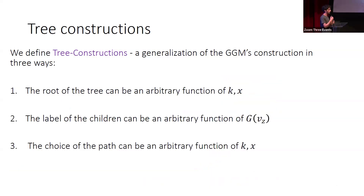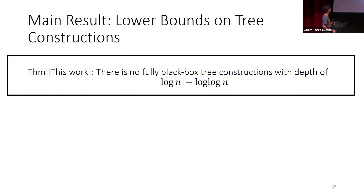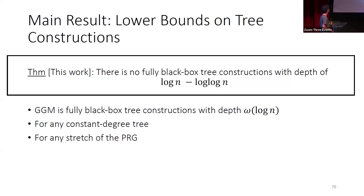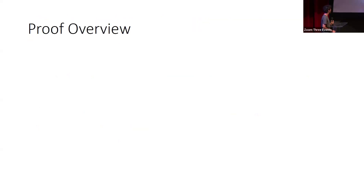GGM is a fully black-box tree construction with depth super-logarithmic, so our result is nearly tight. This result generalizes to every tree with constant degree, not only binary trees; for every stretch of the PRG, not only PRGs from n to 2n; and also for weak PRFs, which have a weaker security definition. To prove it, we use the oracle methodology following previous works. We show that for every sub-depth tree construction, there exists an oracle with respect to which a PRG exists, but if we use this PRG to construct the PRF, we can break it efficiently.